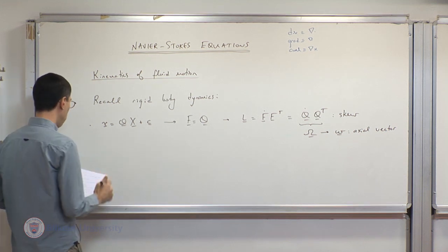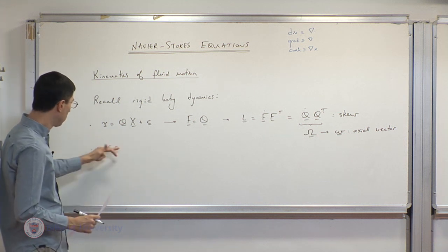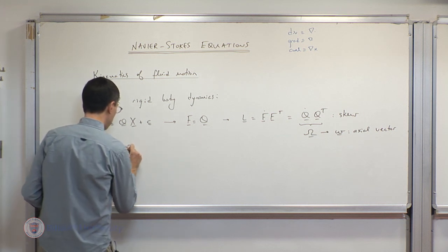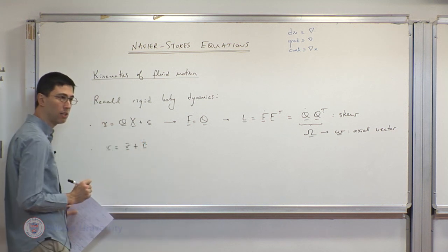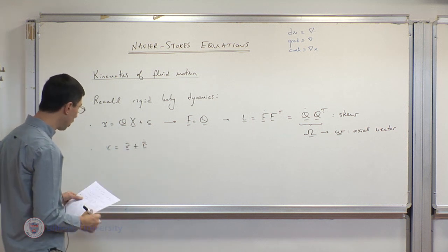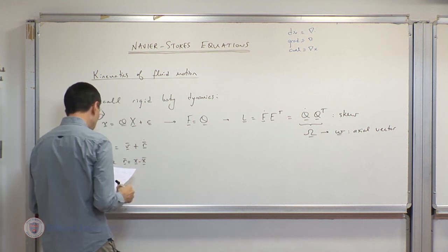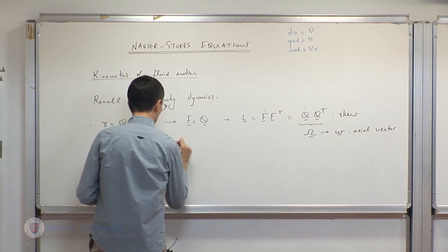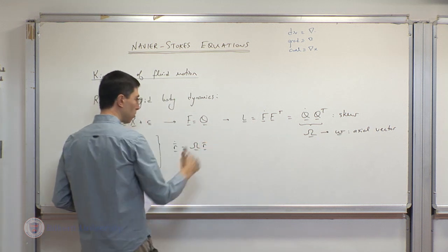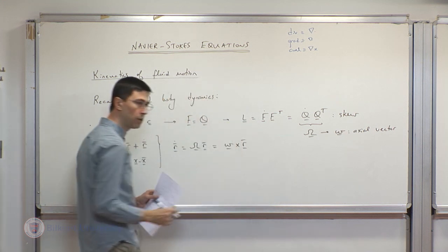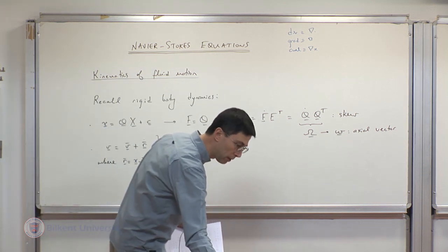Having reminded you of that, the velocity of any point can be written as the velocity of the center of mass v̄, plus the rate of change of relative position r̄ with respect to the center of mass. Here r̄ = x − x̄, and r̄˙ = Ω r̄, which can alternatively be expressed as ω × r̄ since ω is the axial vector of Ω. So far this is just a review.